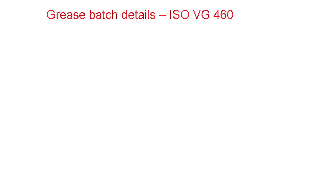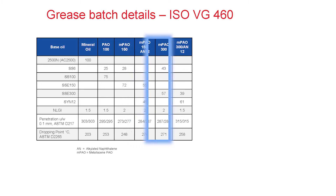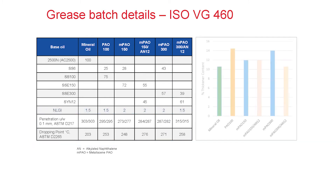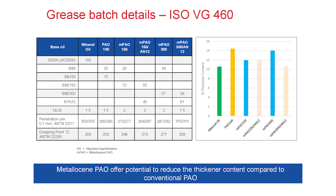In evaluating ISOVG 460 greases, we used the same base stock and base stock blends, but we added alkylated naphthalene 12 centistoke to the MPAO 150 grease and to the MPAO 300 grease to compare the properties. From a consistency perspective, the greases performed almost all the same. As far as required thickener, we see again that mineral oils require the least. With CPAO, the thickener increases significantly, but this amount can be reduced by changing to MPAO. Blending with alkylated naphthalene allows further reduction.